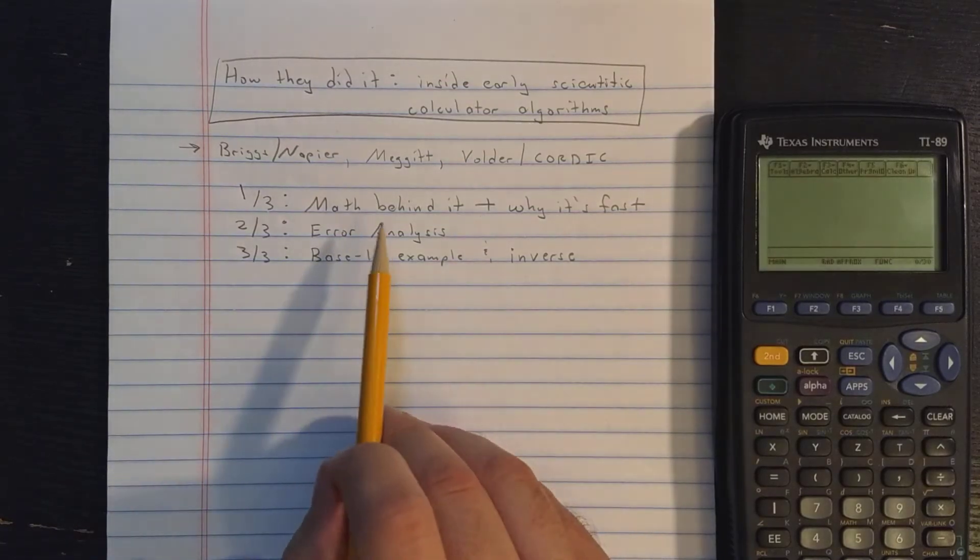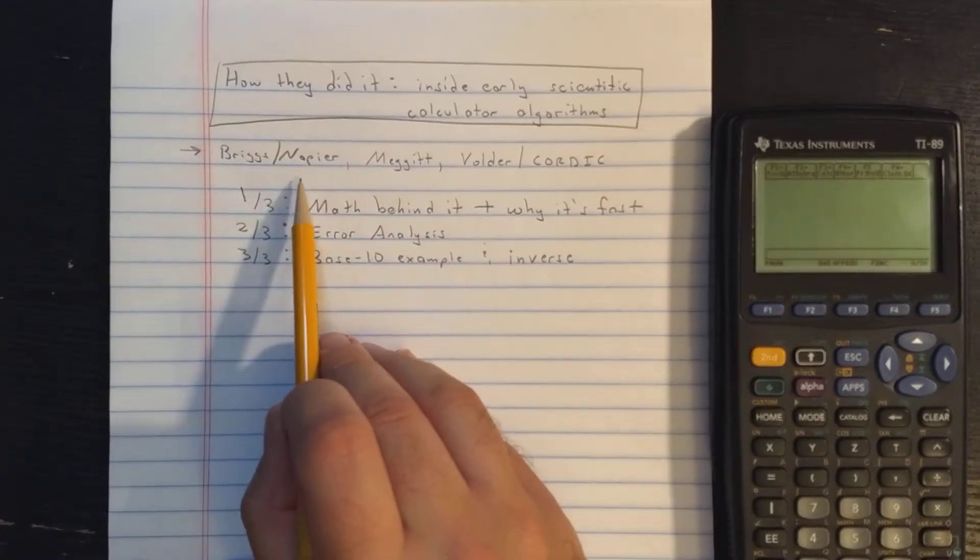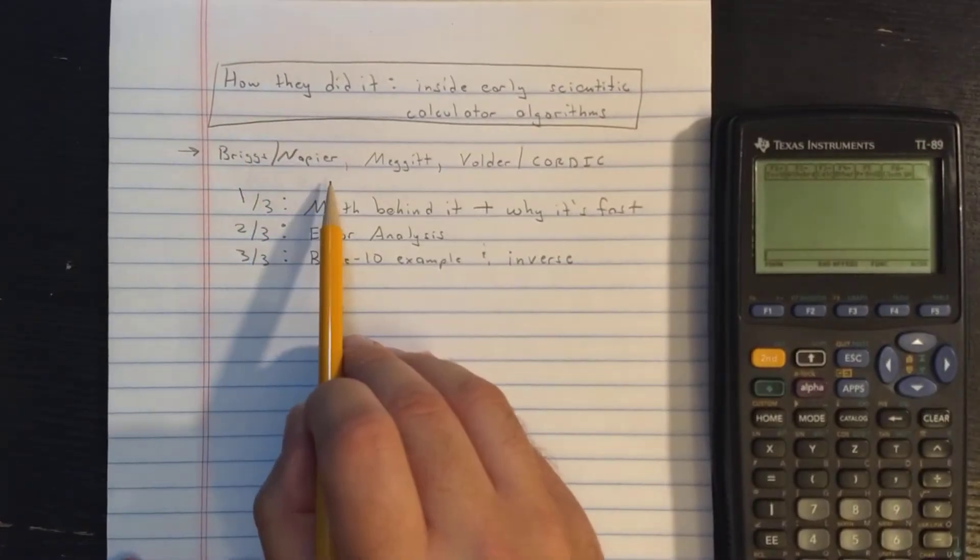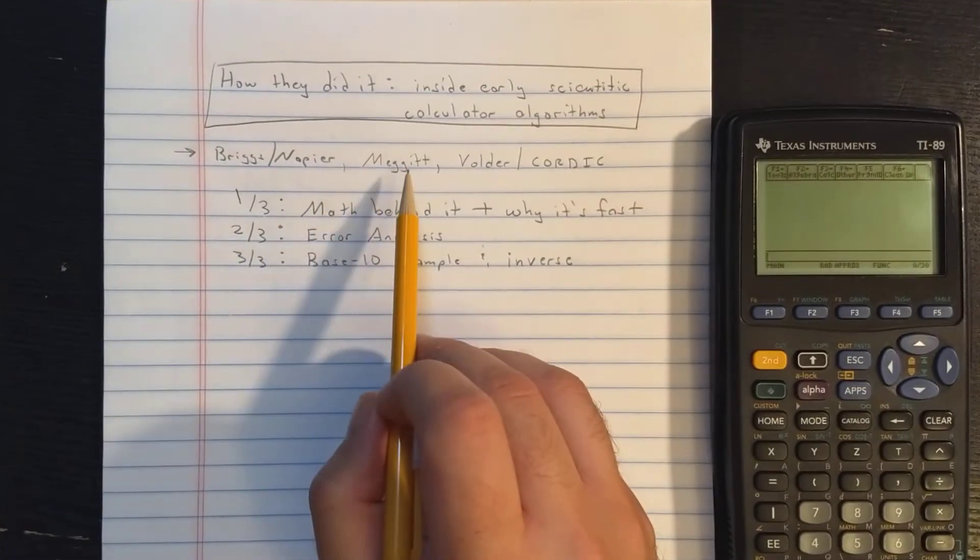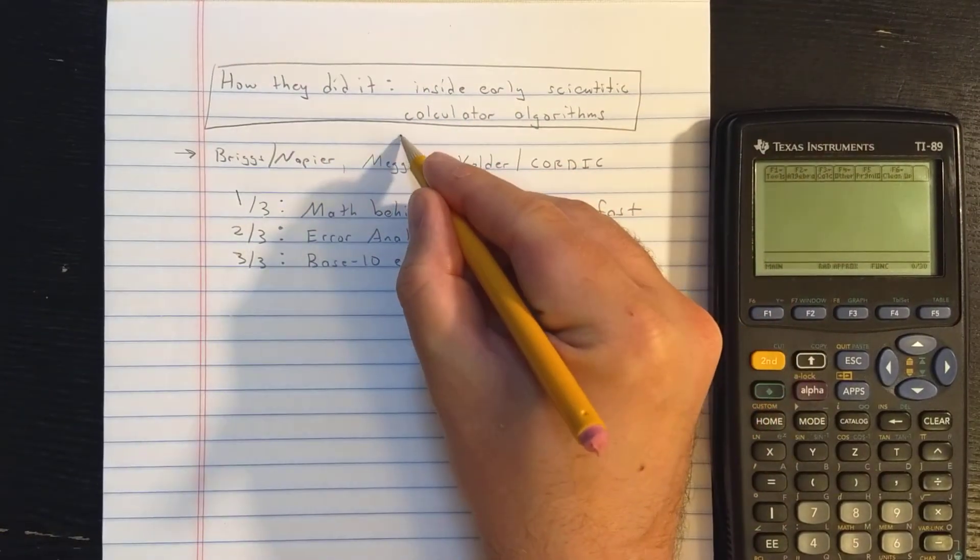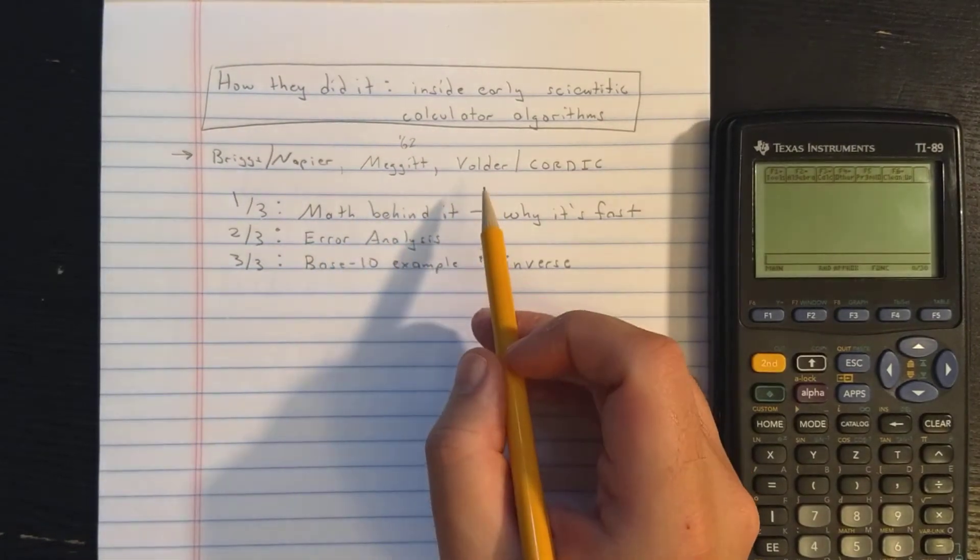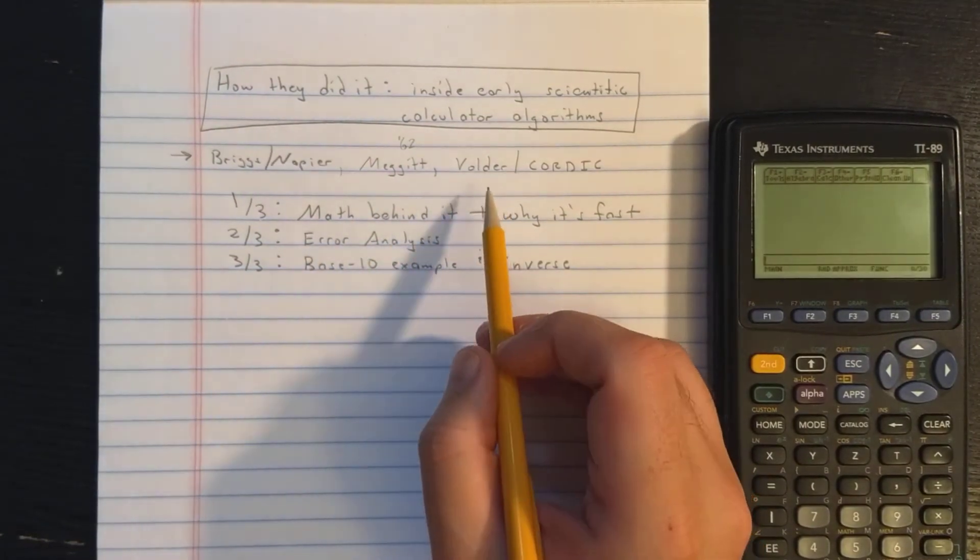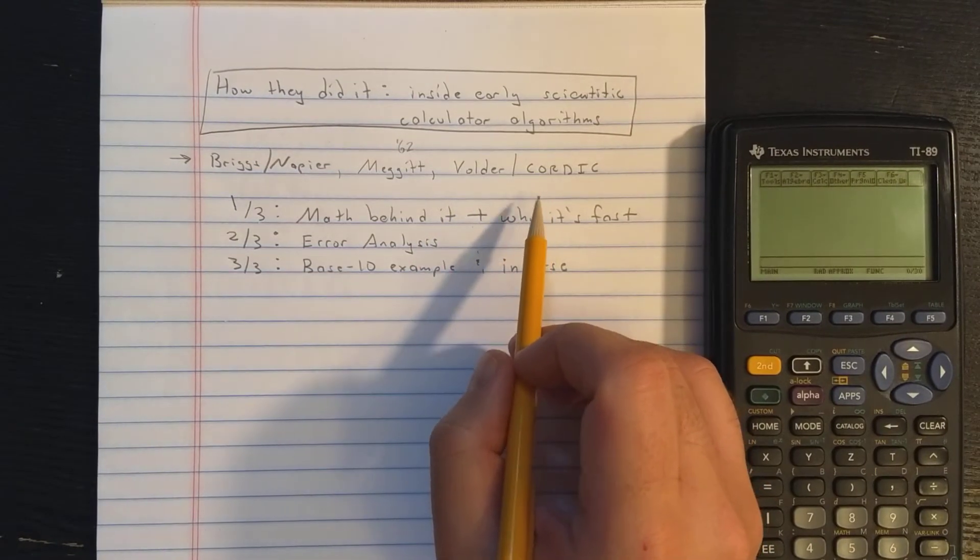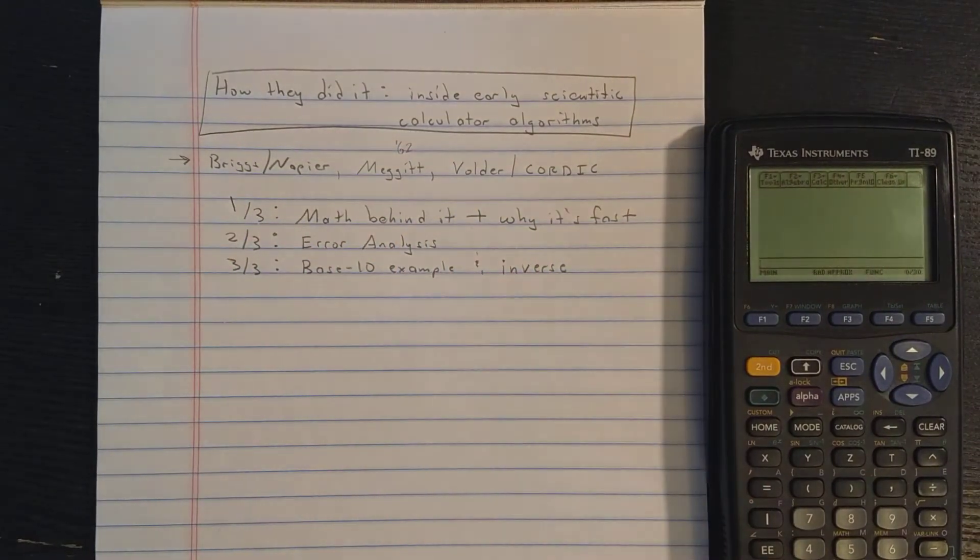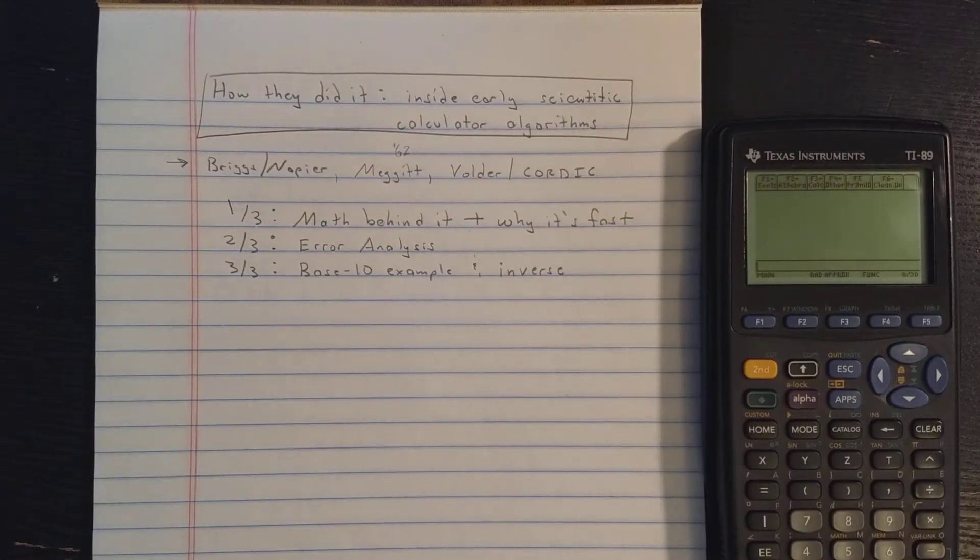The algorithms they used go by various names. Some attribute them to Briggs and Napier. In other words, they're very similar to the original algorithms used to compute the first logarithm tables. There's a nice 1962 paper by Meggitt, and I think it's even an earlier paper by Volder describing an algorithm called CORDIC. Now depending on what variation of these you're using, it's going to have a different name, but they're all kind of based on the same principle.